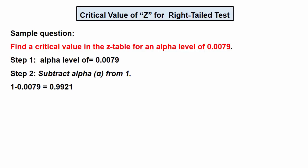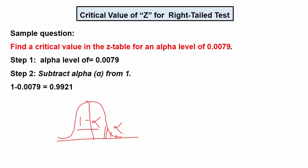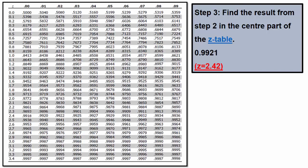Now look at the second example. Here the researcher wants to find out the Z critical value for a right tail test and the alpha, that is significant level, is 0.0079. Again, this is a right tail test, so the critical value will be at the right side of the normal distribution curve. Alpha is 0.079, which is the rejection region, and 1 minus alpha is 0.9921. The next step is to find out 0.9921 in the Z table. Looking at the Z table, 0.9921 is right here. The two important numbers are 2.4 and 0.02. Therefore our critical value is 2.42.